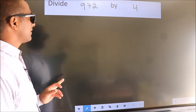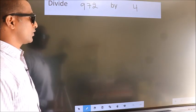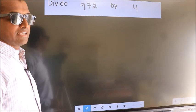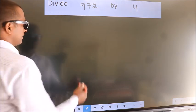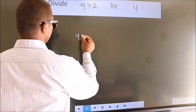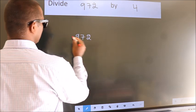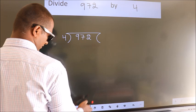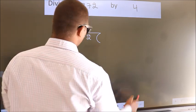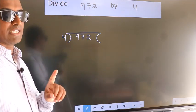Divide 972 by 4. To do this division we should frame it in this way. 972 here, 4 here. This is your step 1.